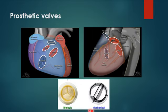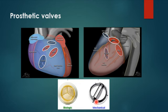Some prosthetic valves are mechanical and metallic, while others are biological with two or three leaflets. A clinical tip: if a patient has a mechanical valve — aortic or mitral — you will hear it click loudly when sitting with them. The biological valve does not click. So you can determine the type without any X-ray.